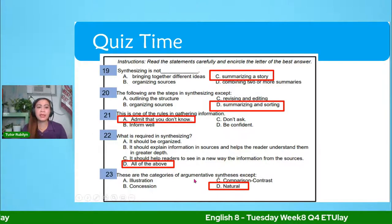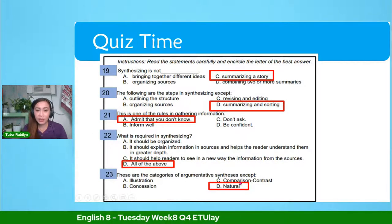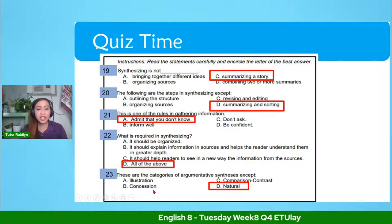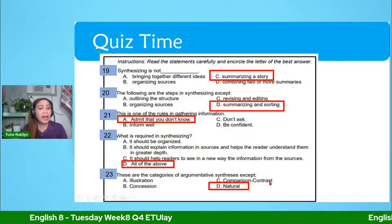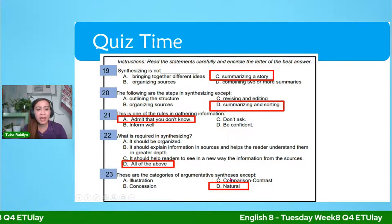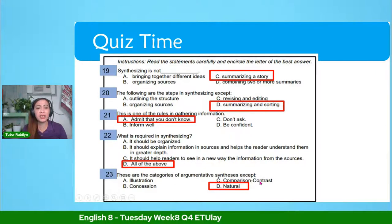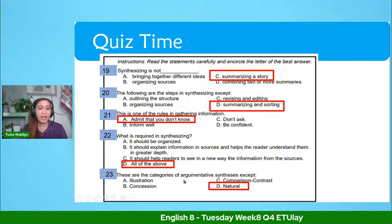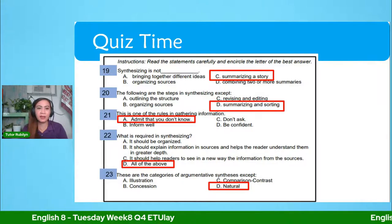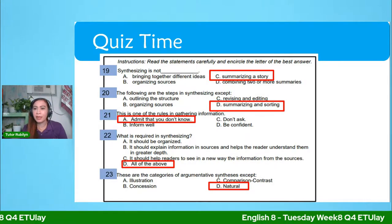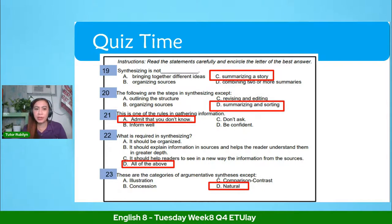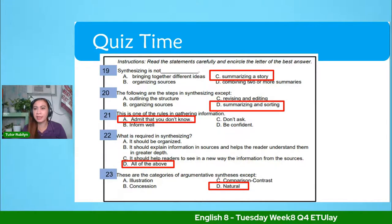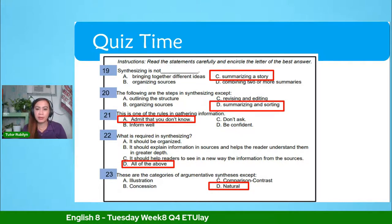Another question: these are the categories of argumentative sentences, except. The answer is 'natural.' Illustration, concession, and comparison-contrast are categories of argumentative sentences. 'Natural' is not a category of argumentative sentences. Hello to Mark, Christine, Gleisa, Diane, Joshua, April, and the rest of you.